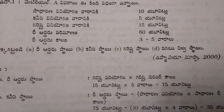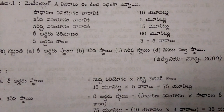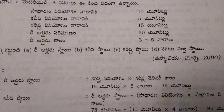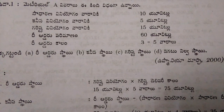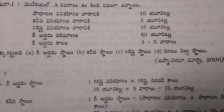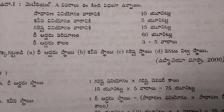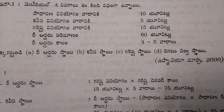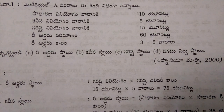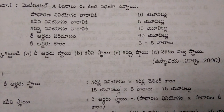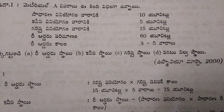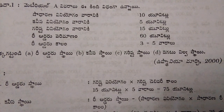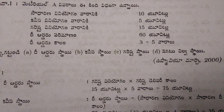One more problem. Normal usage per week: 10 units. Minimum consumption per week: 5 units. Maximum consumption per week: 15 units. Reorder quantity: 60 units. Reorder period: 3 to 5 weeks.